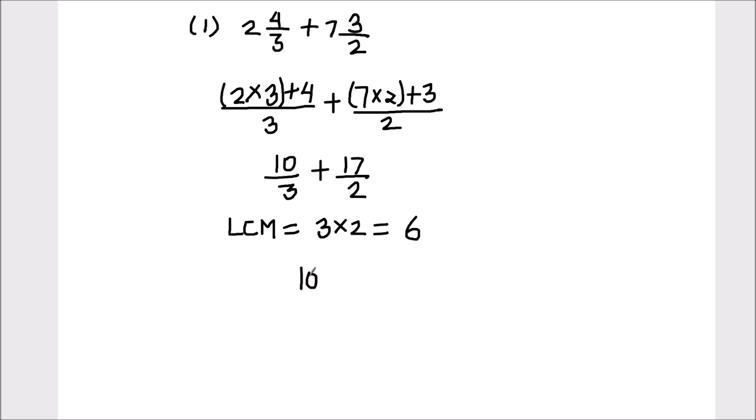So to make 3 equal 6, we are going to multiply it by 2. And as we are multiplying the denominator by 2, we are going to multiply the numerator by 2.